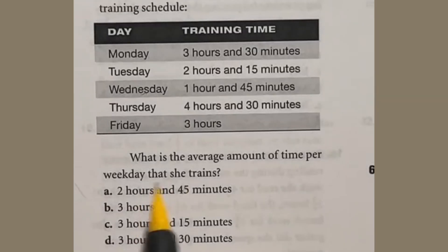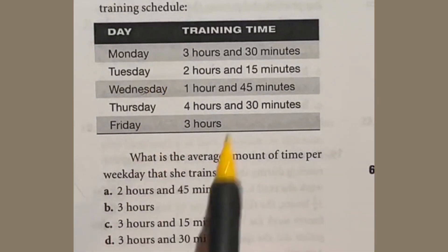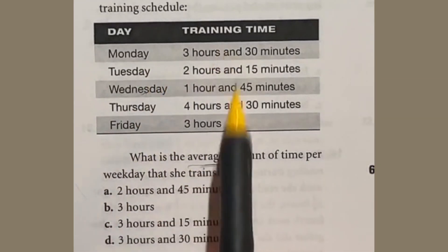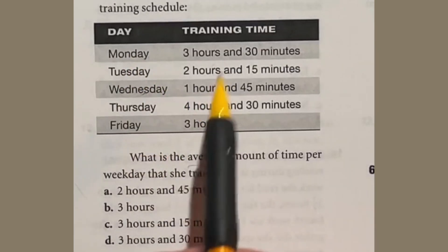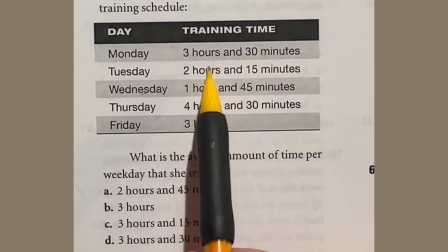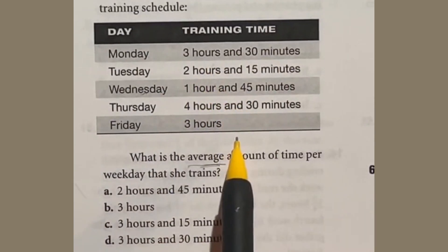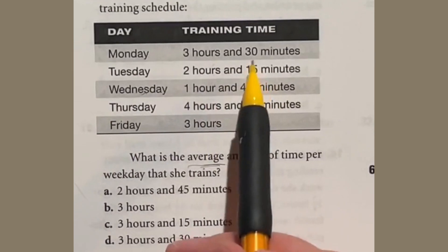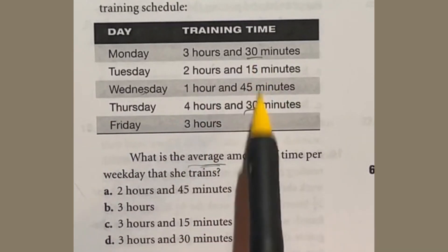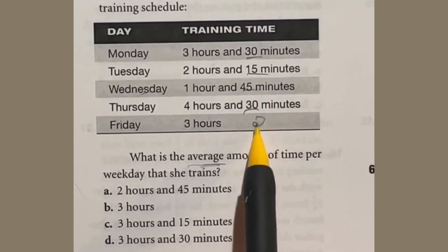In this question we're supposed to find the average amount of time per weekday. Well we have five days here, so to find average we add up all of this time and then divide by five to find out per day. Typically it would be easier to switch all these to minutes, but in this case it's actually faster to do hours because I noticed right off the bat 30 and 30 would give me one hour, and 15 and 45 would give me two hours.